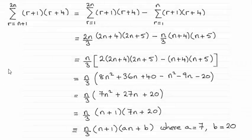Hi there. Now for this part of the question, we had to show that the sum of (r+1)(r+4) going from r equals n+1 to 2n turned out to be something of this form: n/3 times (n+1) times (an+b), where a and b were integers to be found.